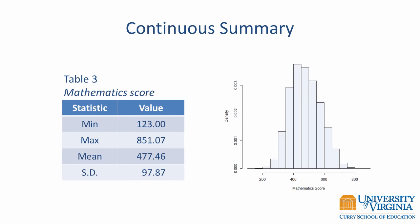Here we see a way to summarize continuous data. The table lists the minimum and maximum values along with the mean and standard deviation. We learn even more about the distribution through the histogram. Mathematics scores have a unimodal and symmetric distribution. A histogram is a good way to illustrate central tendency, variability, and shape of a distribution, and to identify multiple modes if they exist. However, a histogram is not a good way to identify outliers.